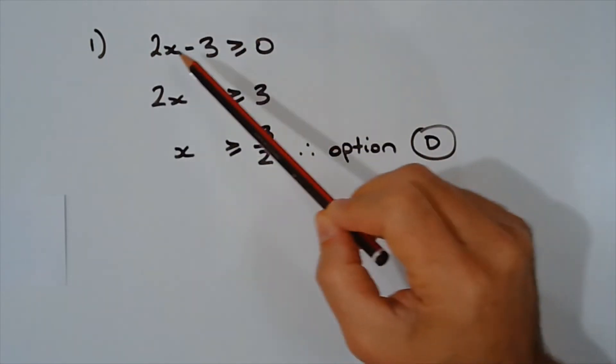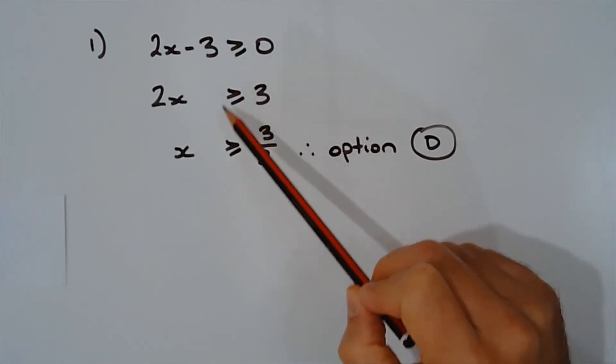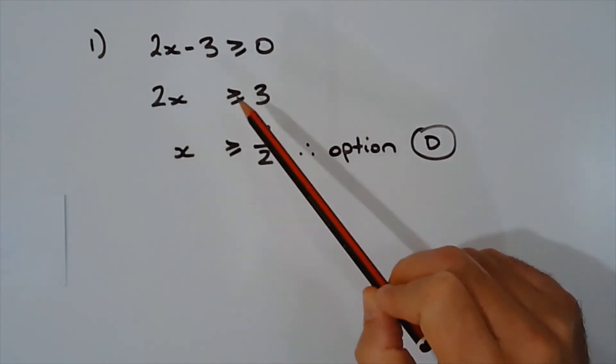So solving this inequality, making x the subject, we'll add 3 to both sides. No need to switch the inequality sign. So we have 2x is greater than or equal to 3.